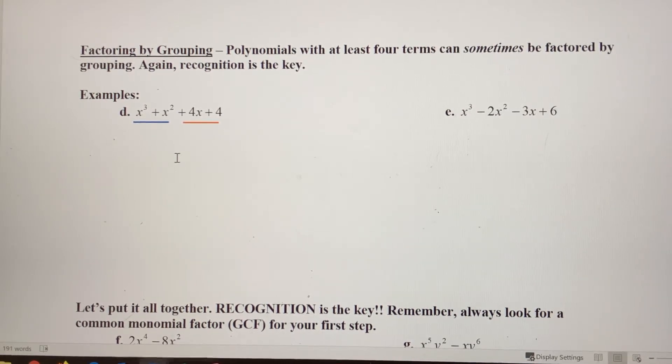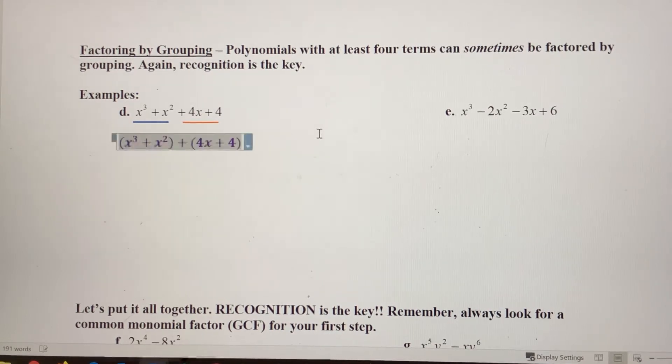We're going to group the first and the second term together. We're going to try to factor that binomial using a greatest common factor, and then we're going to do the same thing for this binomial. We want to separate those terms using parentheses just to show that we've got a binomial plus a binomial.